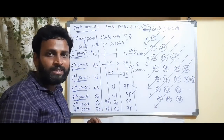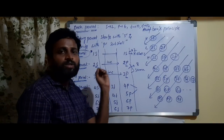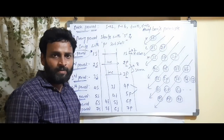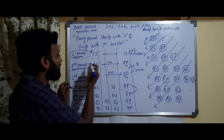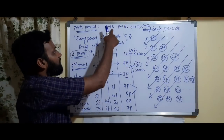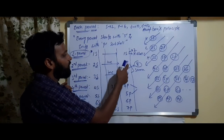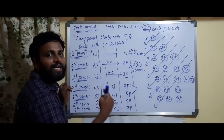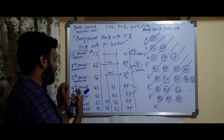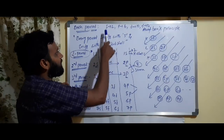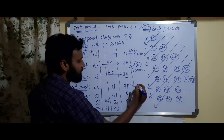The fourth period: S can hold 2, D can hold 10, P can hold 6 electrons. So 2 + 10 + 6 = 18 electrons, meaning 18 elements can be filled in the fourth period. Similarly the fifth period also has 18 elements, since both have the same sub-shell types (S, D, P).